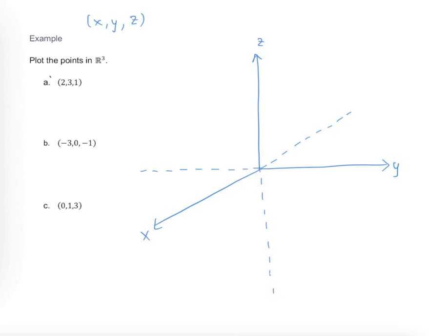So for part a, we're going to plot (2, 3, 1). We're going to come positive 2 in the direction of x. So this will take us to 1, 2 in the direction of x. And then from there, we're going to go three units in the direction of y, coming across the floor here. Sometimes it's easier to graph a little box here in the floor to help us see that corner.